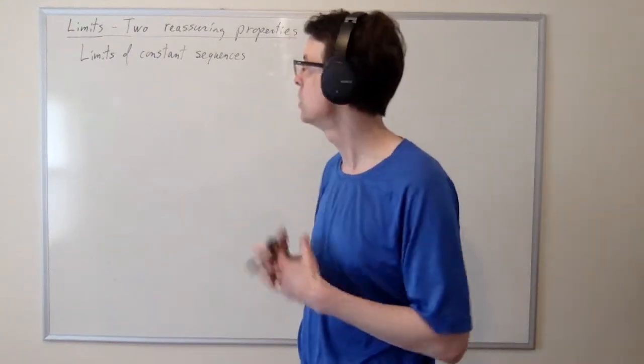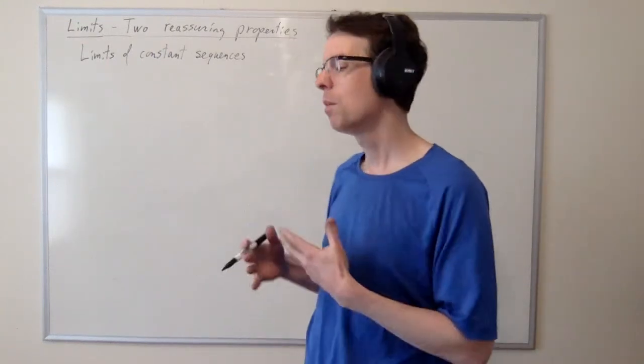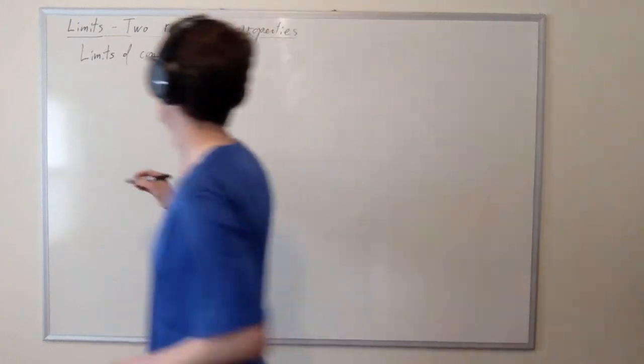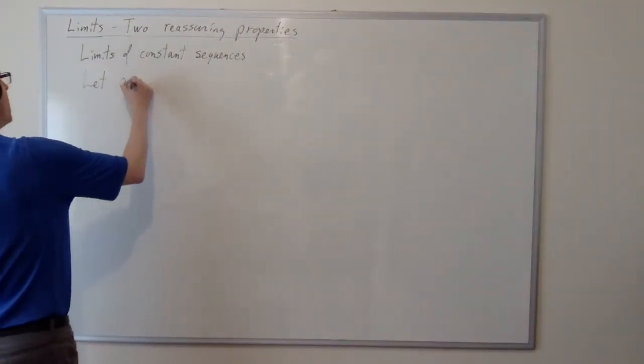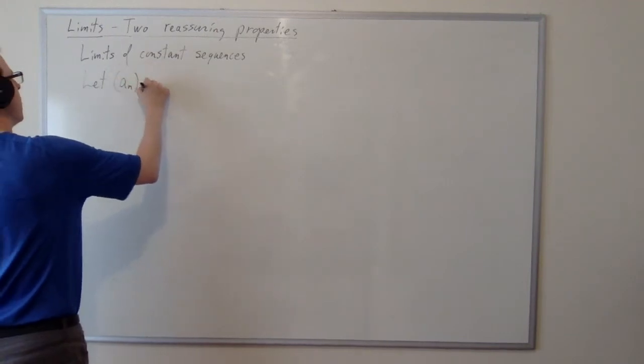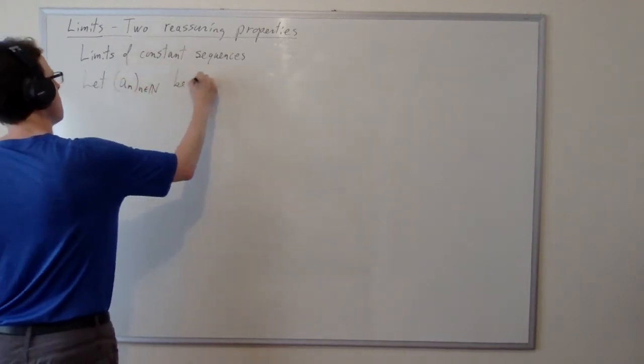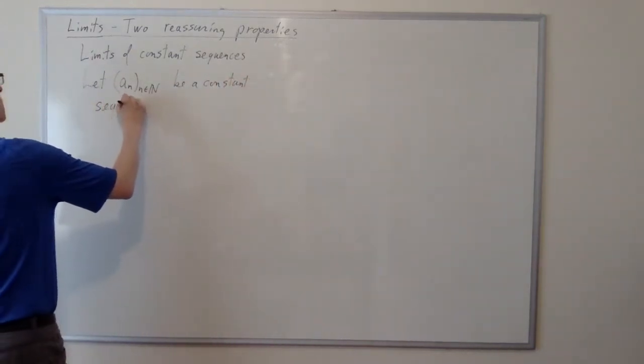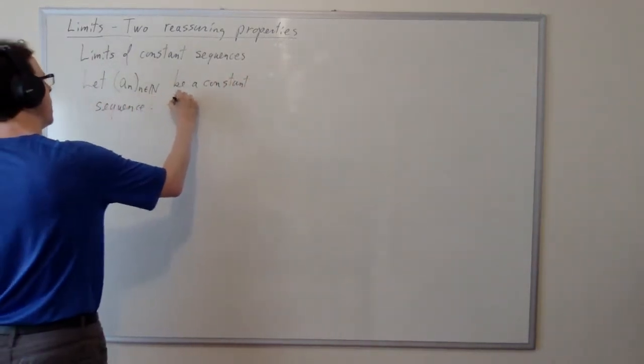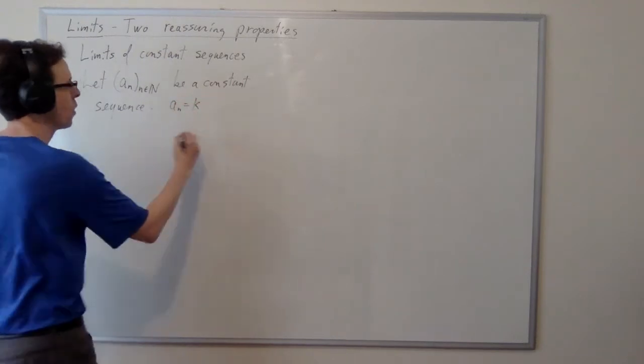That is so simple, but you would likely assume it without even really thinking. But we're going to prove that too. So let's state it properly first. Let a_n in the naturals be a constant sequence. So what does it mean to be a constant sequence? a_n is equal to k for all n.